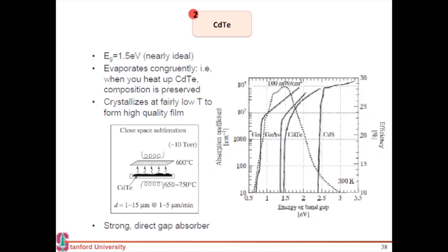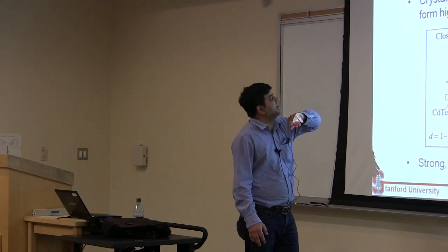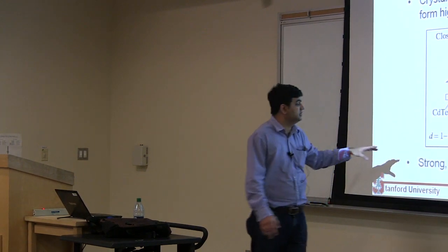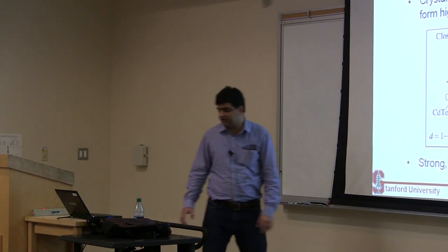If you look at CdTe as a material, it's a direct band gap material with a band gap of 1.5, which falls within the optimum range. The optimum efficiency of a single-junction solar cell occurs at a band gap between roughly 1.0 and 1.5 eV, so the band gap is nearly ideal. It also has a very high absorption coefficient, so you don't need too thick a material — it's a strong direct band gap absorber.